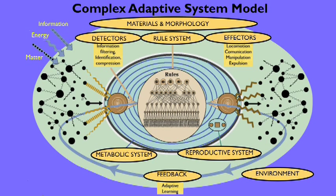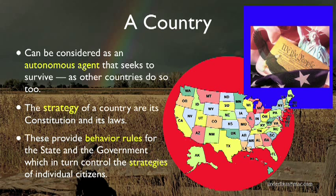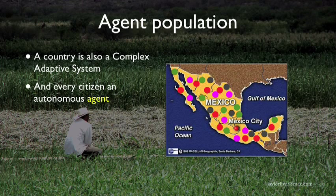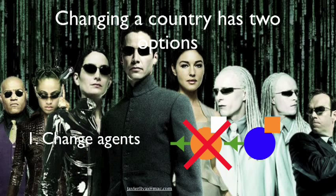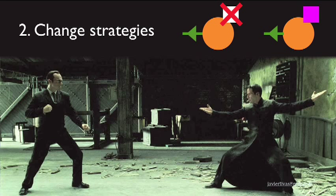Here is a graphical description of the components and structure of a complex adaptive system. A country can be considered as an autonomous agent that seeks to survive, as other countries try to do so too. The strategy of a country consists of its constitution and its laws, which provide behavior rules for the state and for the government, which in turn control the strategies of individual citizens. A country can also be a complex adaptive system itself, with every citizen an autonomous agent. Changing a country has two options: you change agents or you change strategies.